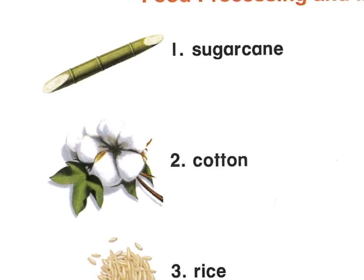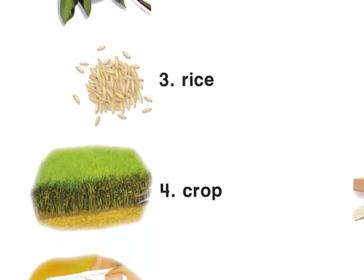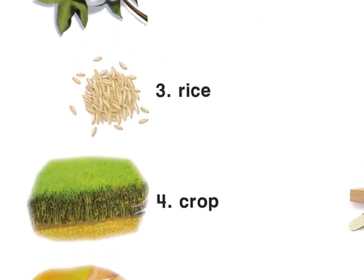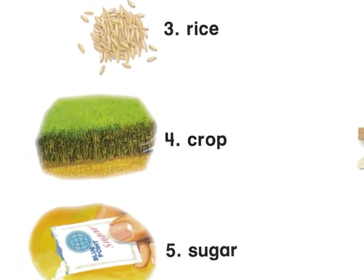Sugar cane is a crop grown in the South. Cotton is used to make thread, clothing, sheets, and so many things. Rice is now grown in the South, but be careful — they used to grow cotton there and pesticides that kill beetles for the cotton are still in the soil, which can contaminate the rice. I do not buy rice from the South because I do not like poison in my rice.